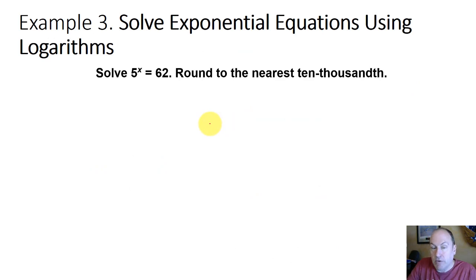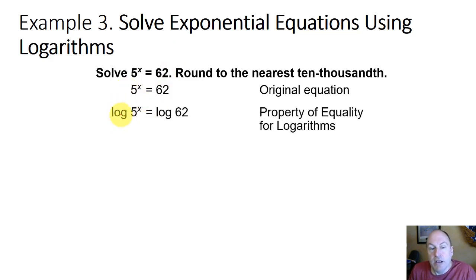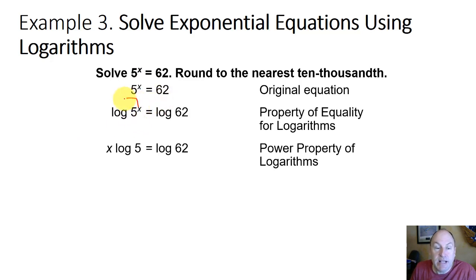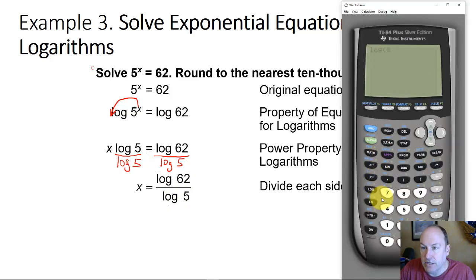Let's solve exponential equations using logarithms — this is really the purpose for which logarithms were originally developed. To solve 5 to the x equals 62, we take the log base 10 of both sides: log of 5 to the x equals log of 62. Using the power property of logarithms, x times the log of 5 equals the log of 62. Dividing both sides by the log of 5, x equals log 62 divided by log 5, which is approximately 2.564.